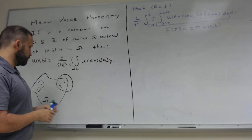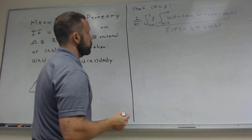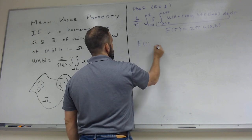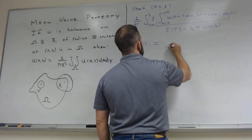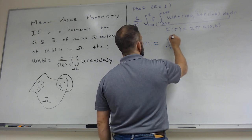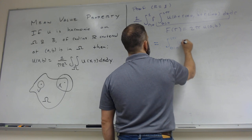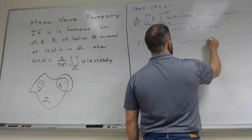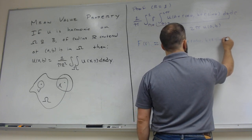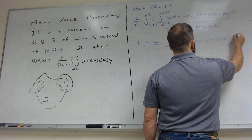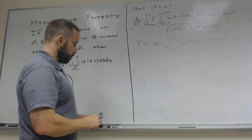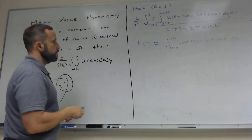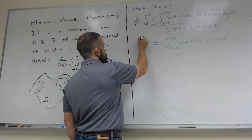So let me look at F(r). F(r) is equal to the integral from θ = 0 to 2π of U(A + r cos θ, B + r sin θ) dθ. What I'm going to do is take a derivative with respect to r. When I do the derivative with respect to r on the outside, r is not one of the limits and not the variable of integration, so I can just move the derivative inside.